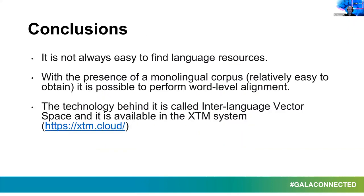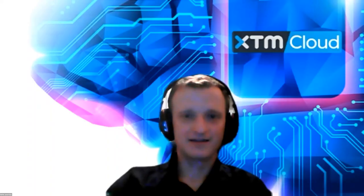This is my final slide. Let me formulate some conclusions. First of all, it's not always easy to find language resources for specific languages. What we are most likely to find is a monolingual corpus, because being able to find texts in one language is much easier than finding translations, let alone bilingual dictionaries. So it's easiest to get a monolingual corpus. And once we get a monolingual corpus, that's all we need for the new language we want to analyze. We have the interlanguage vector space technology, and we basically offer support for this new language. The technology is now available in the XTM system. Thank you very much.